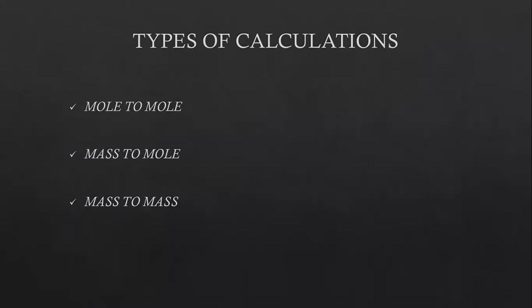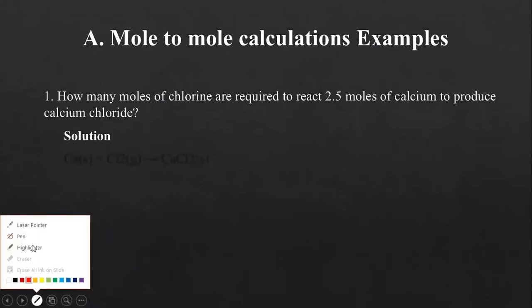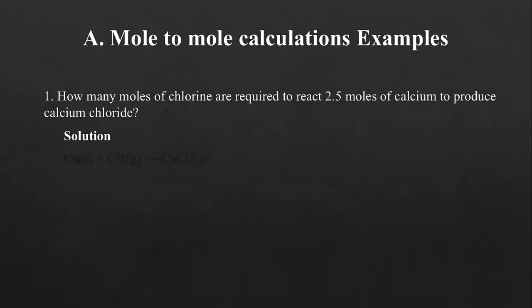The first thing we are dealing with is the mole-to-mole calculations. Pay attention to my blackboard as I teach. Let's look at some example questions. The first question reads: how many moles of chlorine are required to react 2.5 moles of calcium to produce calcium chloride?